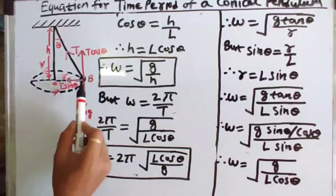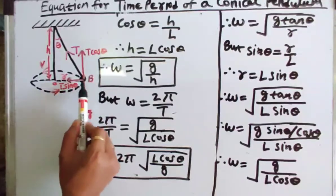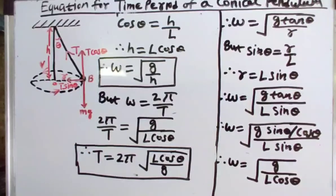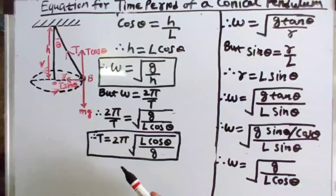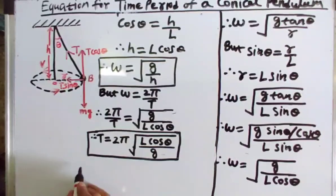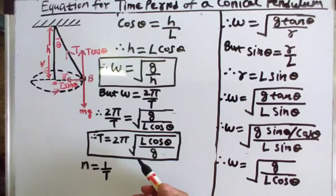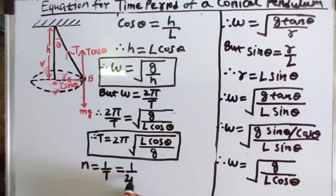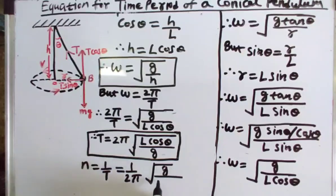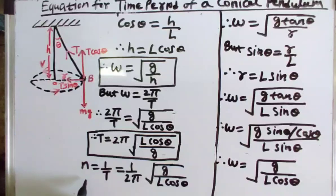From this equation we can also find the frequency of revolution. The frequency n equals 1/T, which is the reciprocal of the time period. Therefore n = (1/2π)√(g / L cosθ). This is the equation for the frequency of revolution of a conical pendulum.